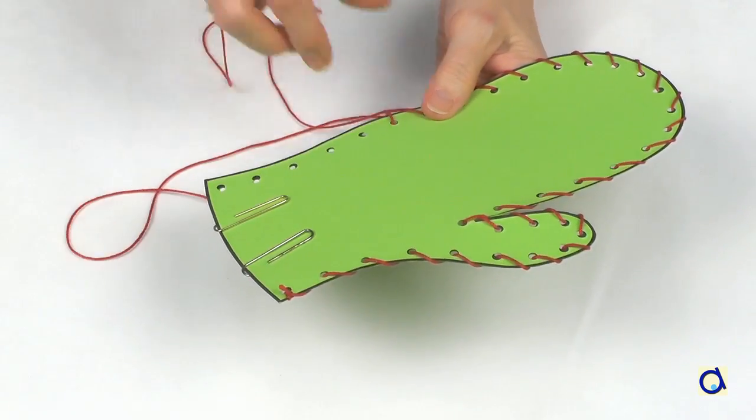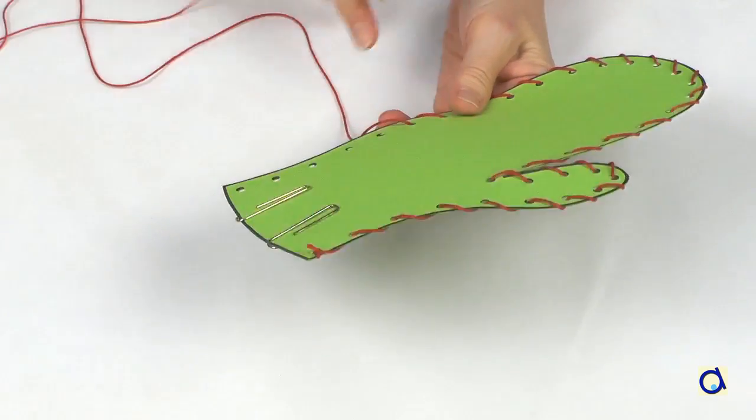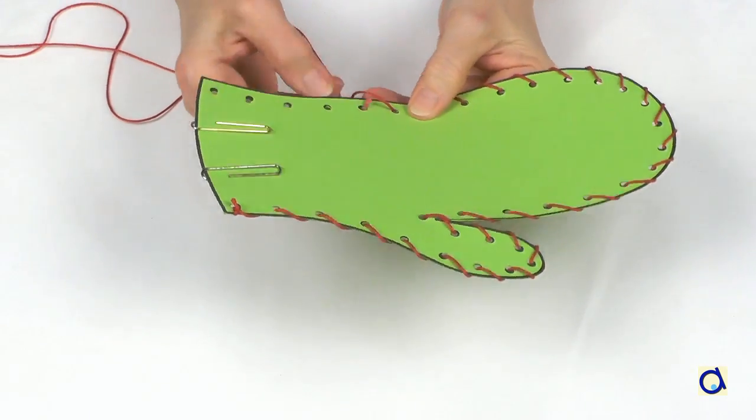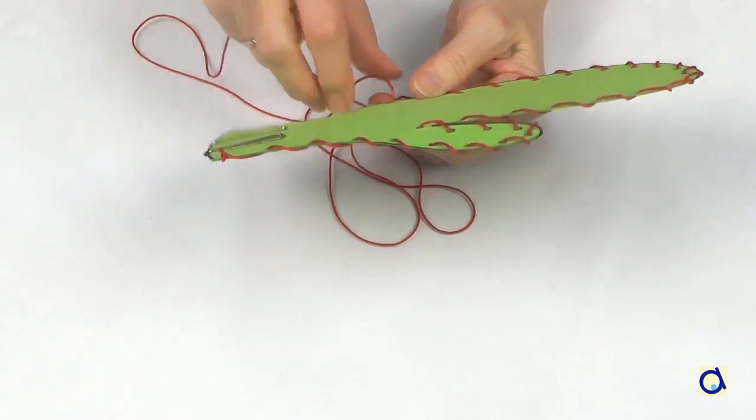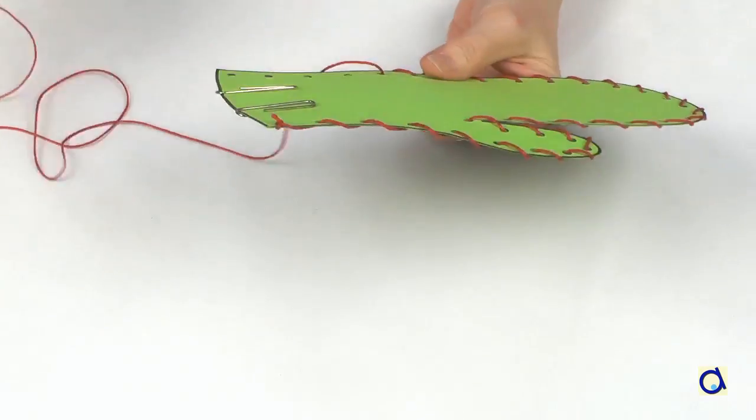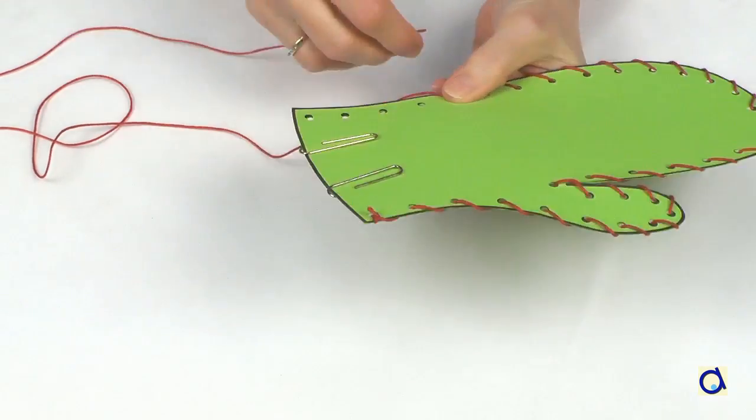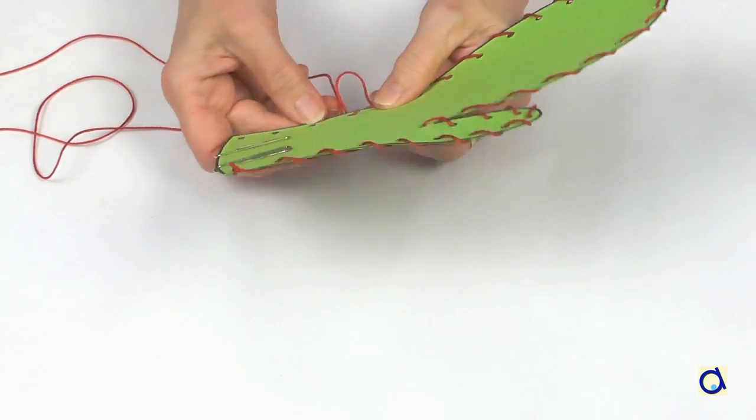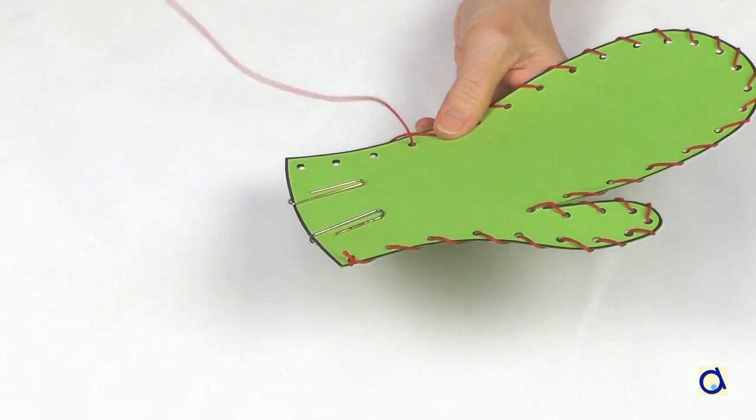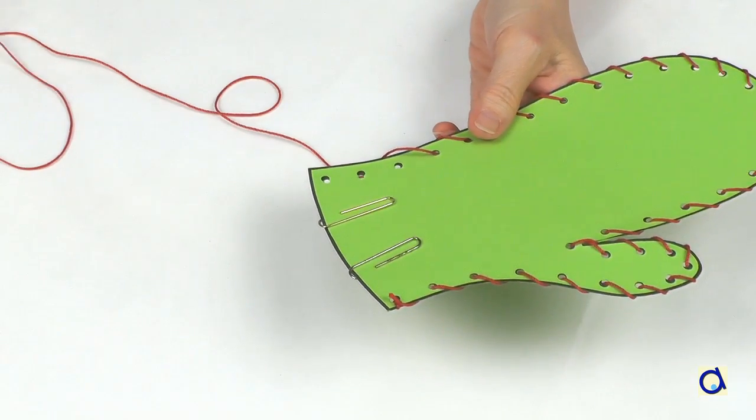A second possibility is to always pass the yarn upwards in a spiral movement. In this case, you will need a longer piece of yarn. As in the first case, start by threading the yarn through the first hole and tie a knot in the first hole.